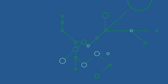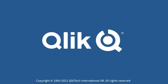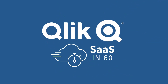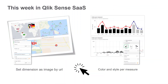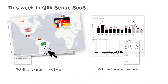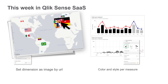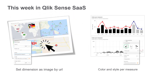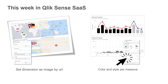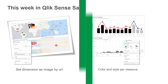Hey guys, this is Mike Tarallo with Qlik and welcome to SAS in 60. This week we introduced the ability to use custom images from a URL to represent location data points within a map point layer, as well as additional styling improvements to our combo chart.